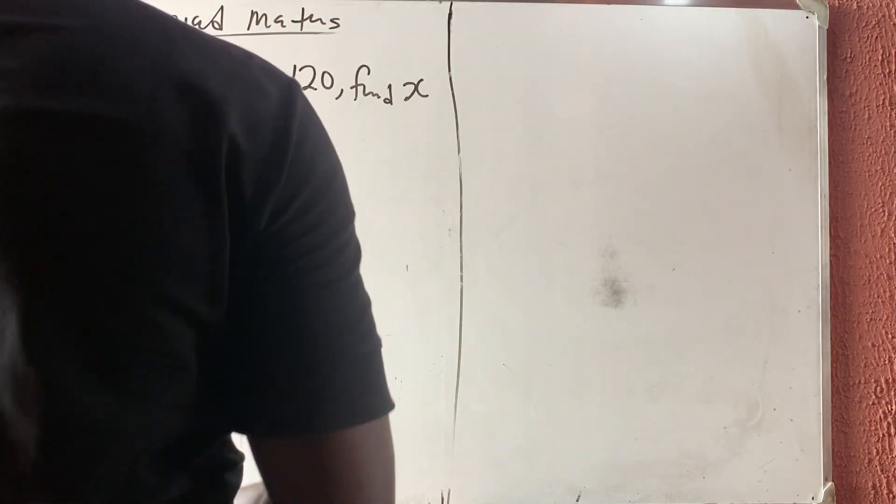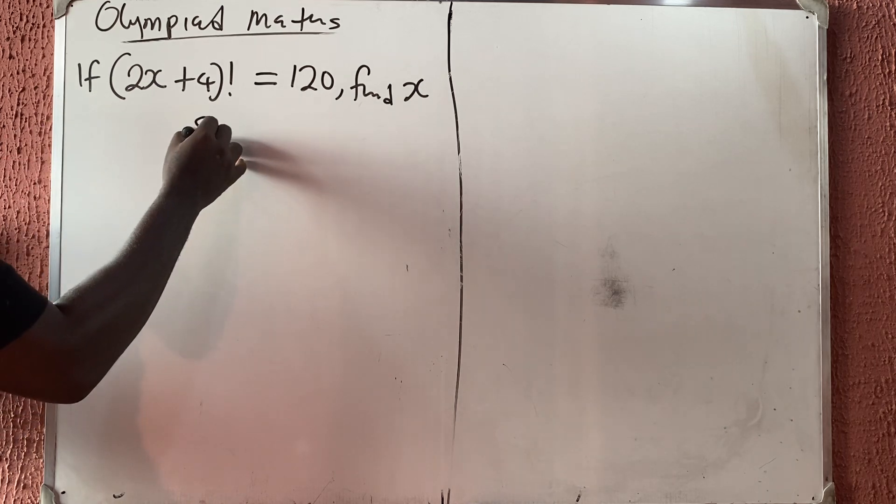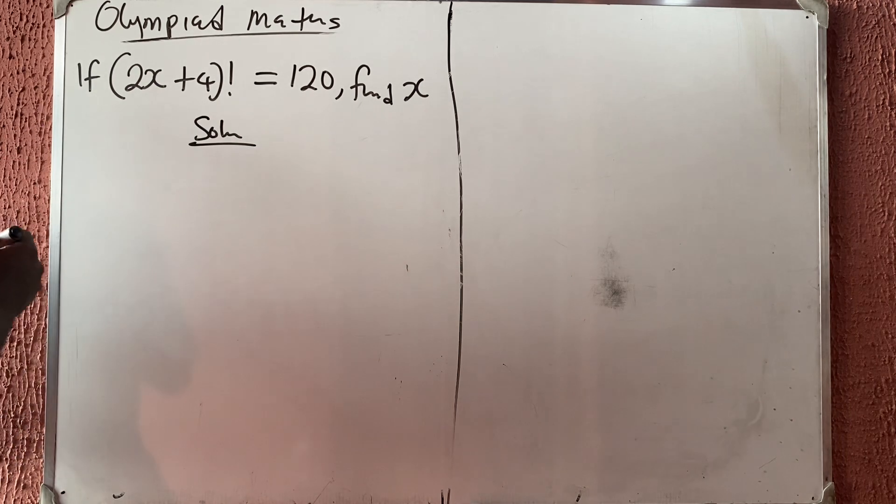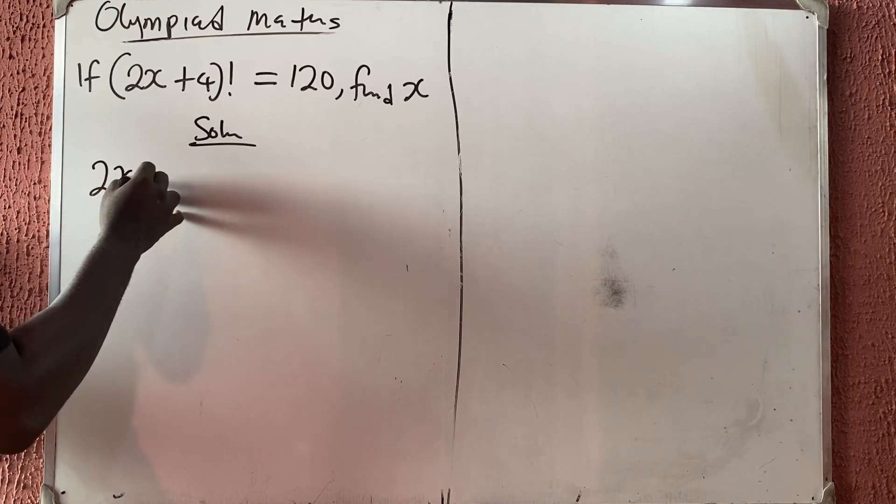Alright, let us quickly solve this problem. This is an Olympiad question. Let's say that 2x plus 4 factorial is equal to 120. Find x. So I have that 2x plus 4 factorial is equal to...